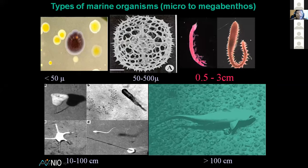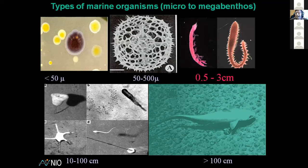I have put up some pictures just to show the size fractions. We have bacteria or bacterial-size forms, foraminifera, and meiofaunal forms — this is what we call microfauna or micro-benthos and meiobenthos. The 0.5 to 3 centimeter range is what we have for macrobenthos, and bigger than all these are the megabenthos. This is the classical traditional classification of benthos followed by benthic ecologists.